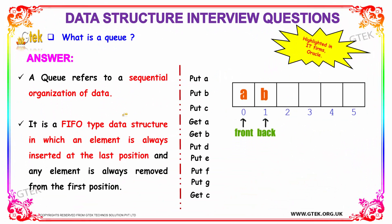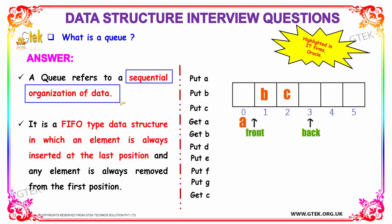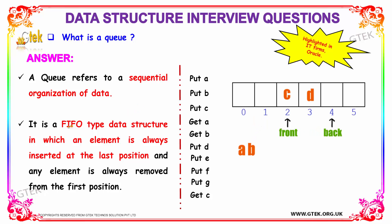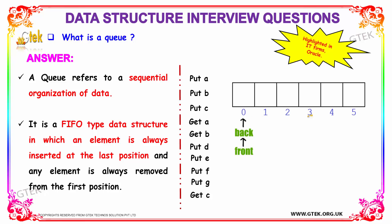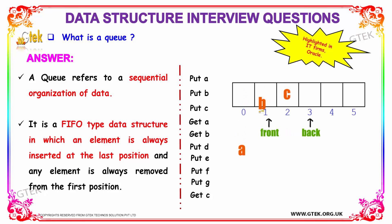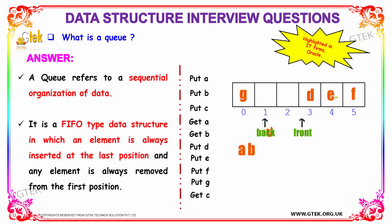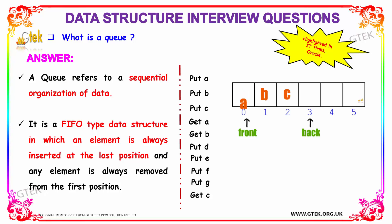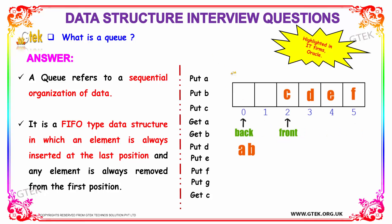Our next question is: what is a queue? A queue refers to a sequential organization of data. It works on FIFO — first in first out. It is a data structure in which an element is always inserted in the last position and any element is always removed from the first position. For example, put A, put B, put C, followed by get A and get B; then D, E, F, and G are added to the back. As the queue grows, elements are added to the back and dequeued from the front. These kinds of questions are highlighted in IT firms and Oracle.